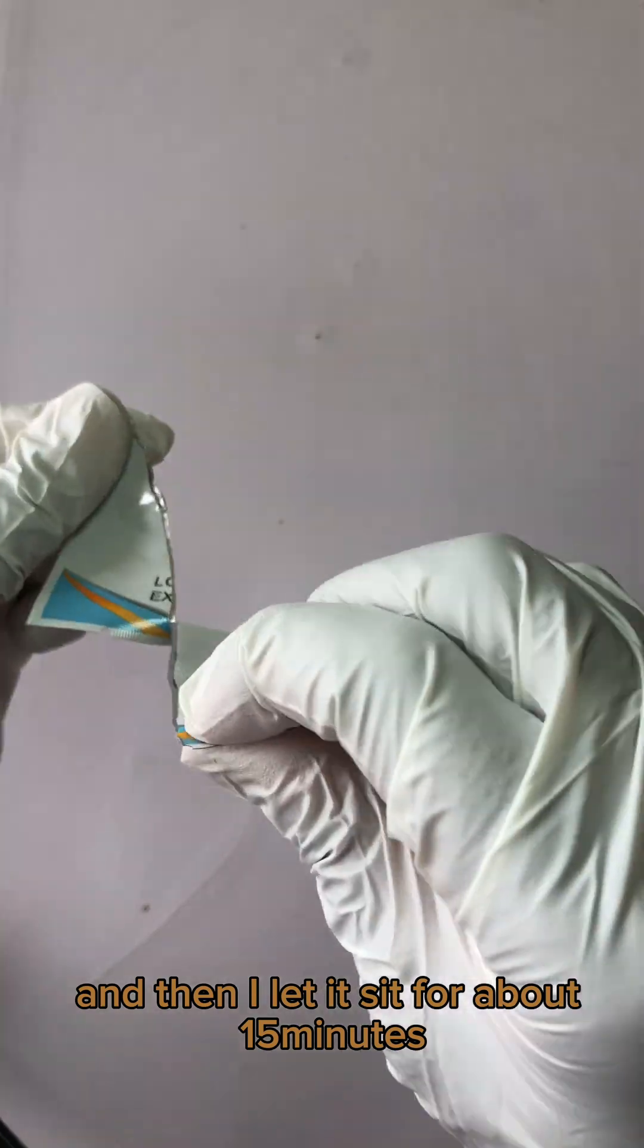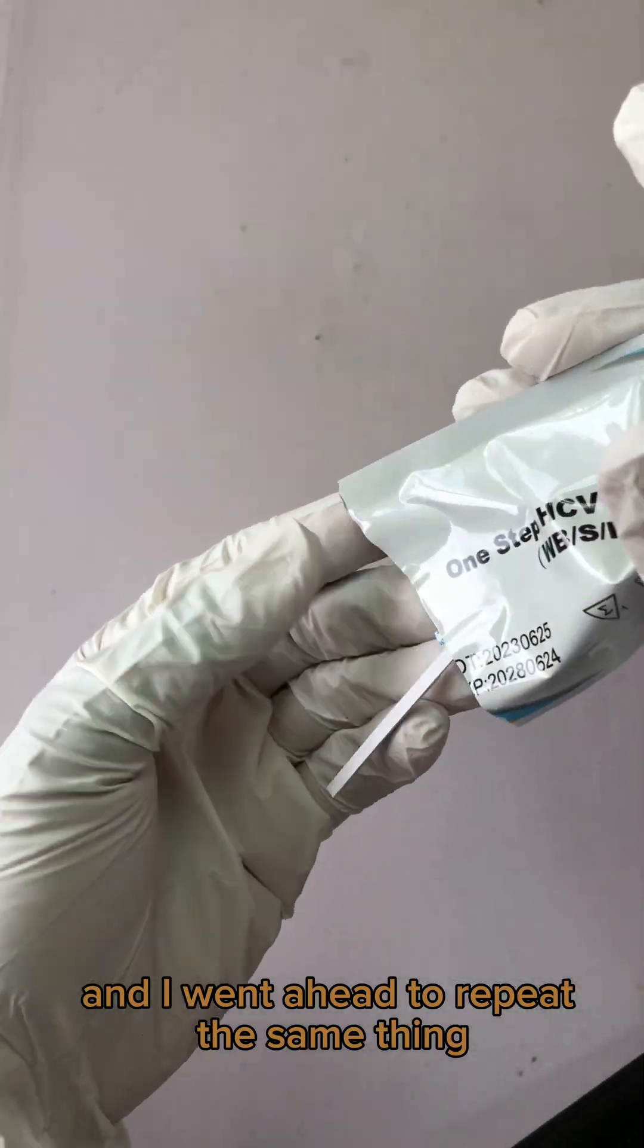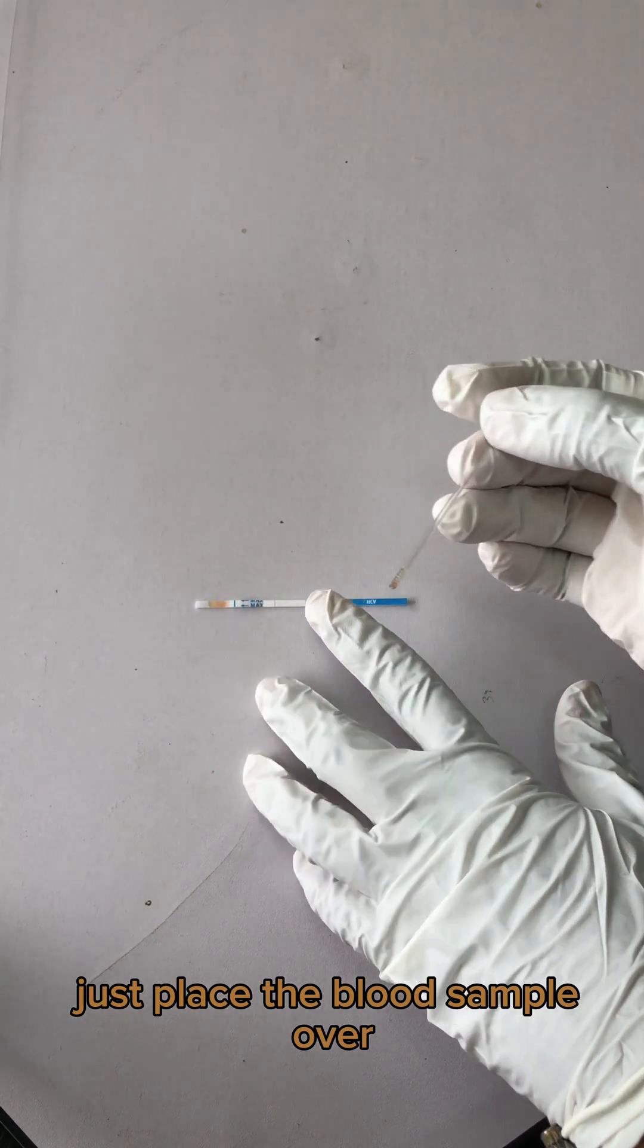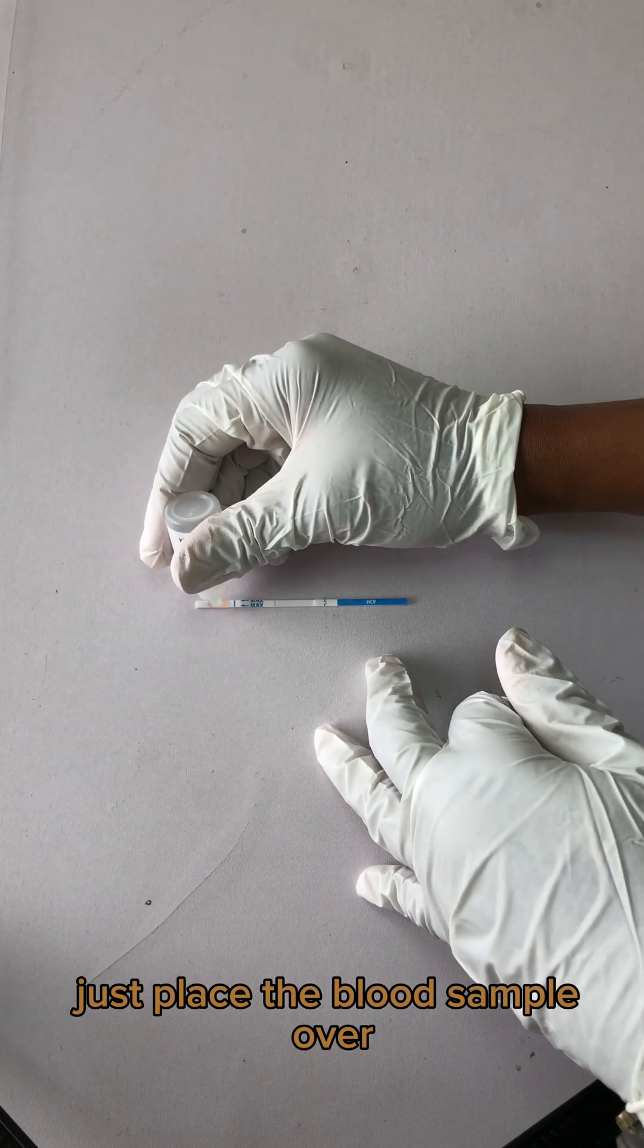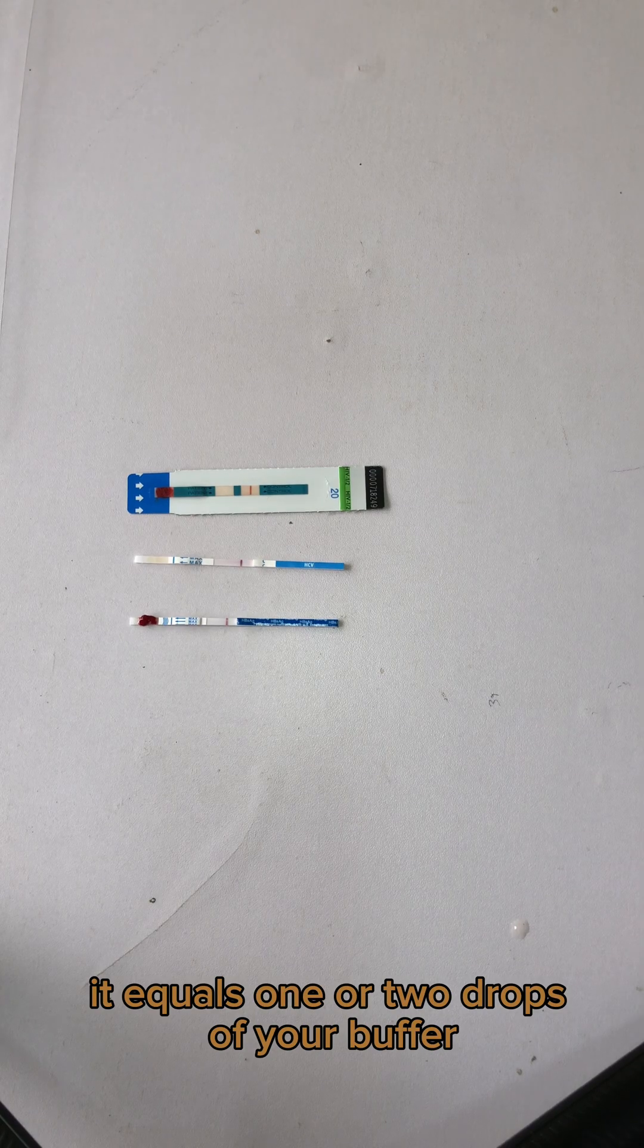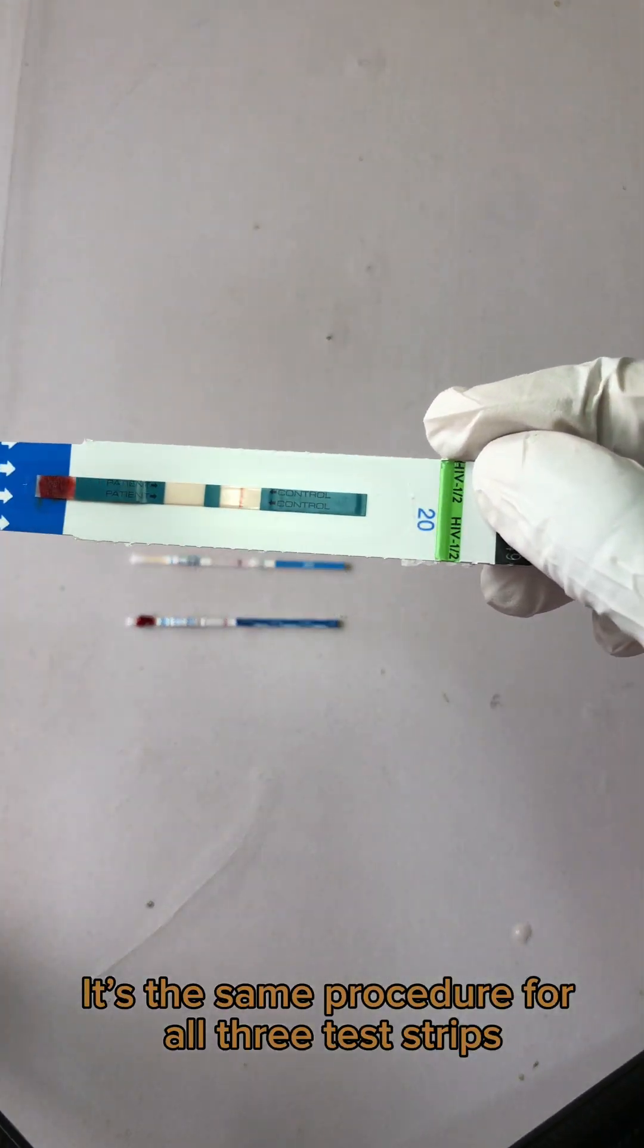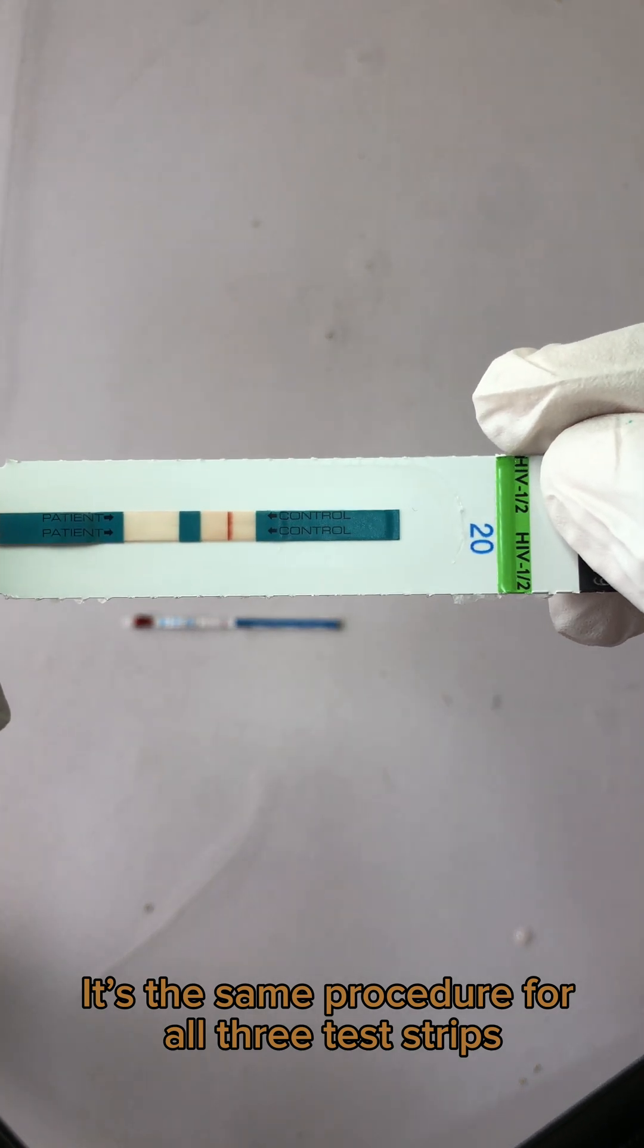And I went ahead to repeat the same thing on the Hepatitis C test strip. Just place the blood sample over it, you put one or two drops of your buffer, and then you watch it. It's the same procedure for all three test strips.